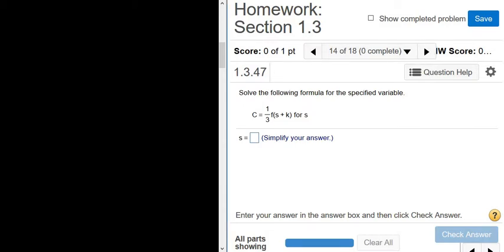Solve the following formula for the specified variable. So we're looking for lowercase s. I'm going to go ahead and rewrite the question. So we have big C equals one-third F parentheses s plus k.